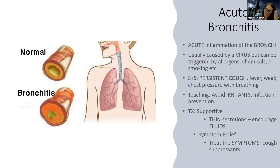Acute bronchitis is a lower respiratory issue of the bronchi. A lot of times people mix it up with chronic bronchitis, which is similar to COPD, but acute bronchitis is an acute inflammation, usually as a result of a virus, but it can also result from chemical exposure, smoking, or allergens. The defining symptom is a persistent cough that doesn't go away — usually lasting for months — and it can be productive.